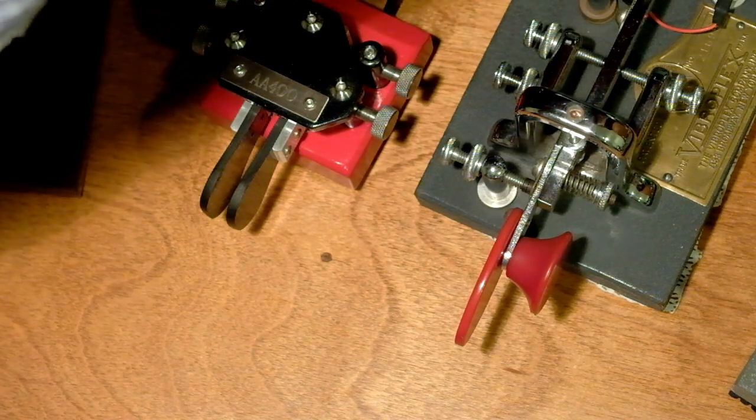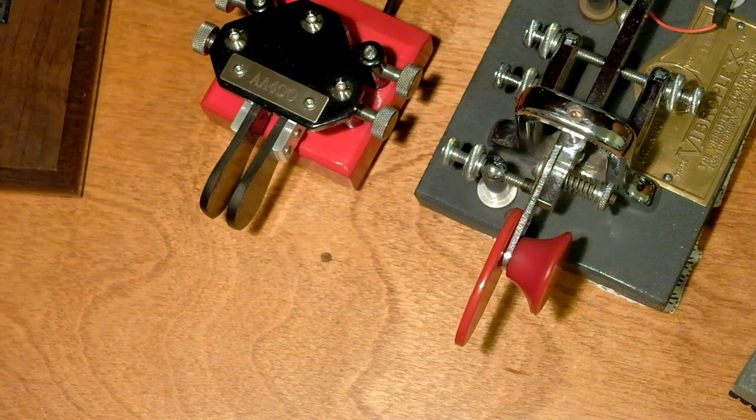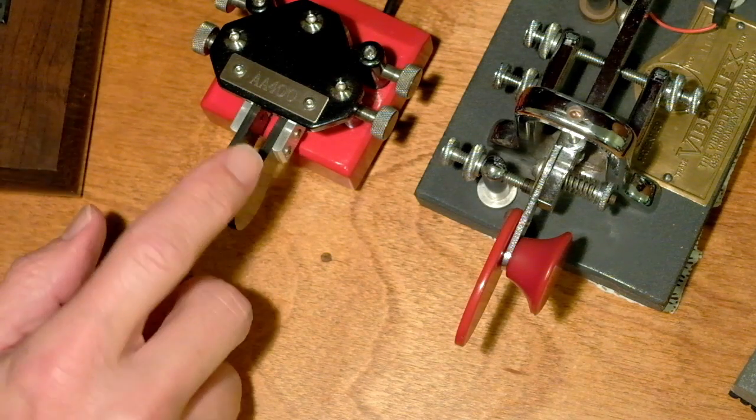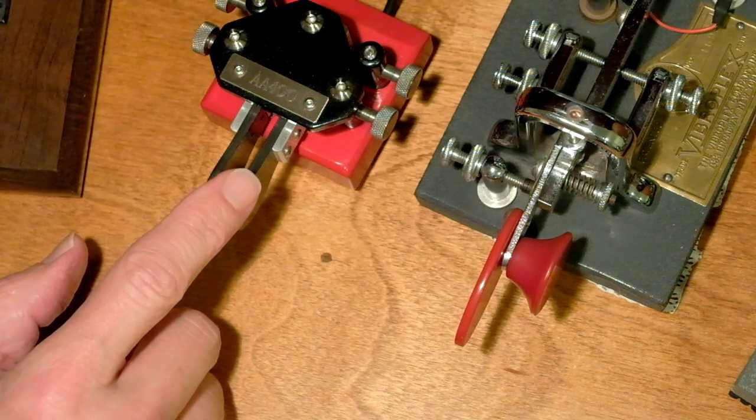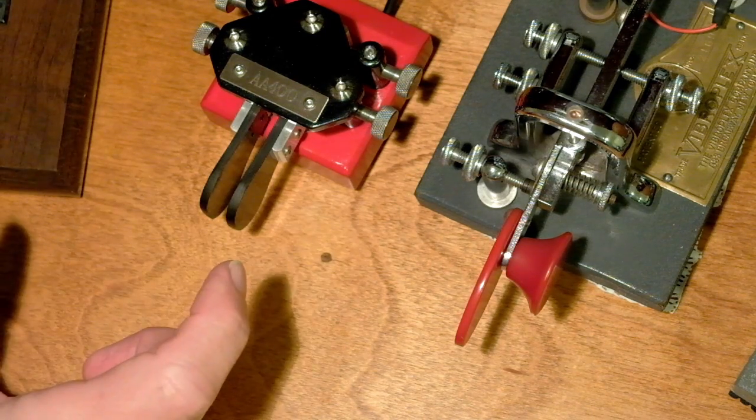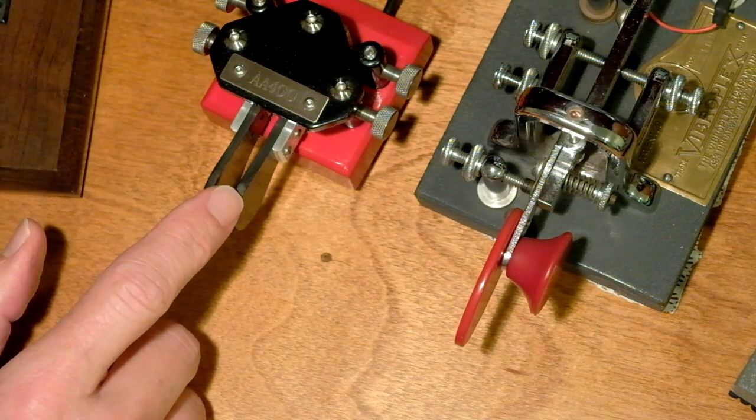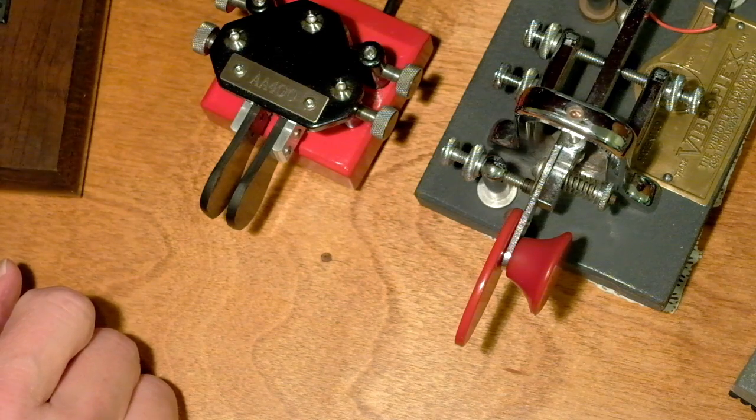If I'm in mode B, now we're in mode B. The difference is whatever element it's sending when I let go, it's going to finish sending that element and send the opposite element, then stop.